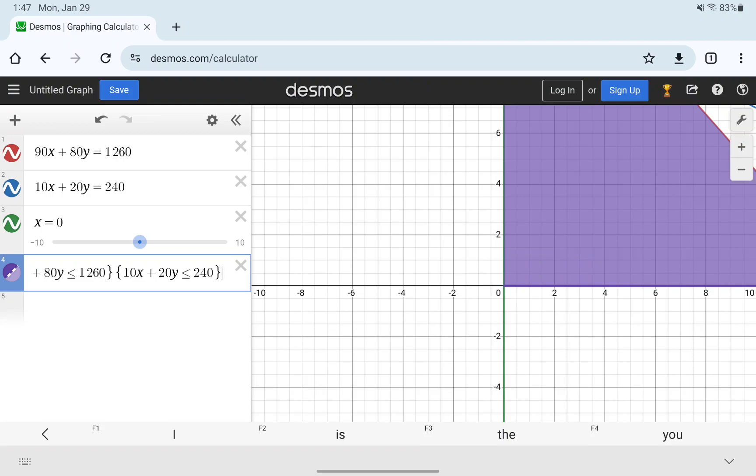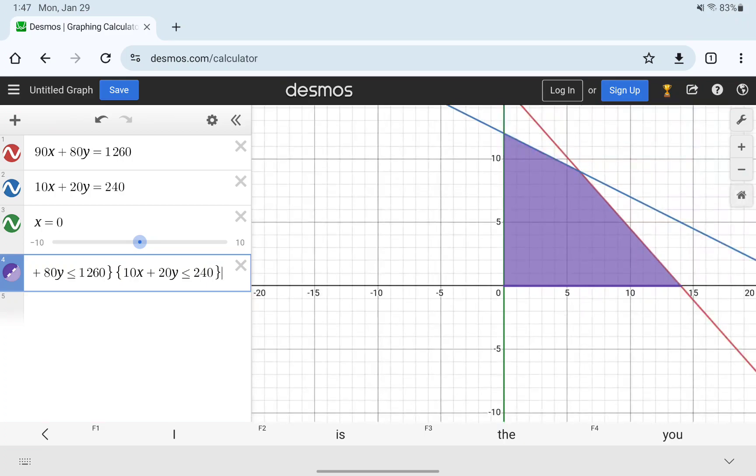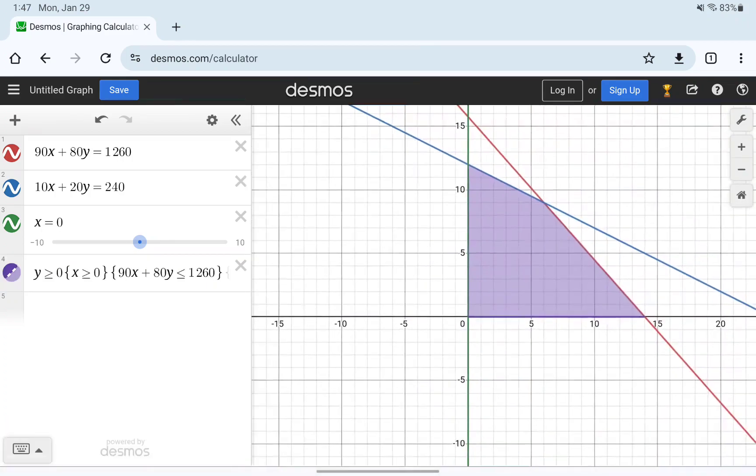Doing it this way, where we put in those constraints with the curly braces, does involve a fair amount of typing. But in my opinion, it really just simplifies the whole process because now I can more readily identify those corner points because I have that shaded region.